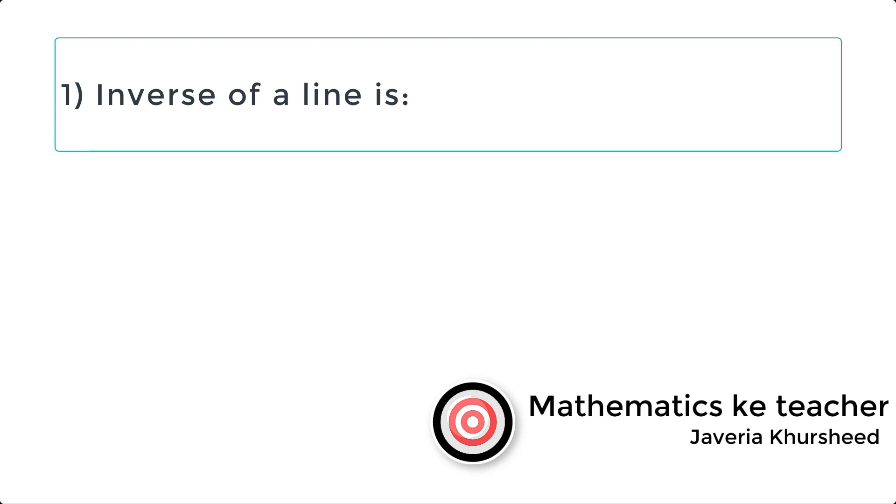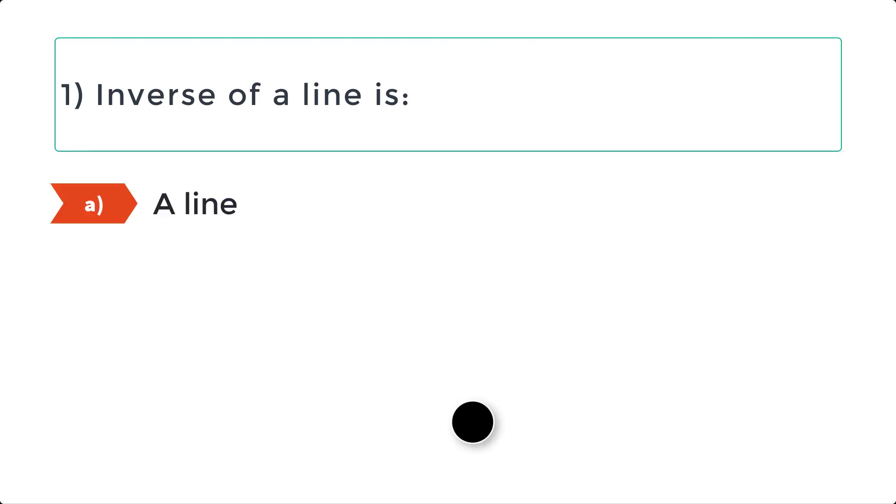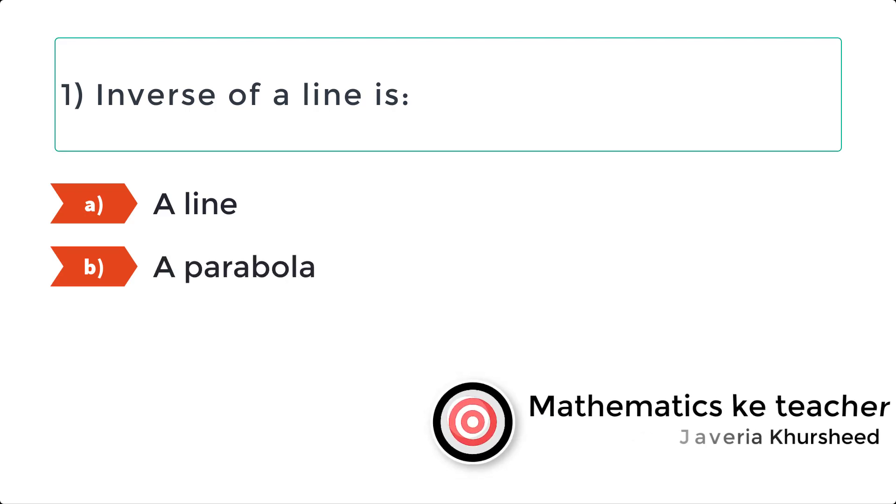Inverse of a line is A. A line. B. A parabola. C. A point. D. Not defined.